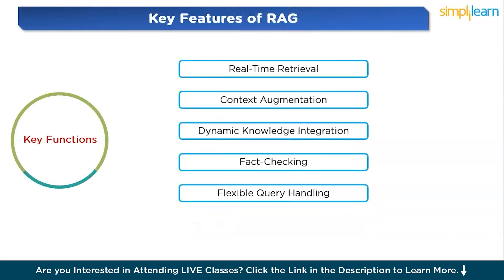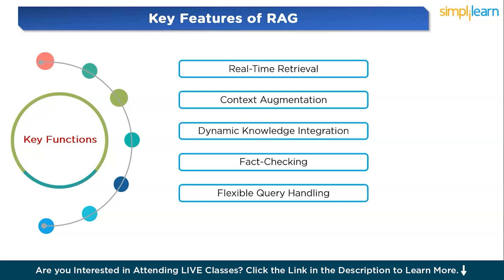Let's look at some key features of RAG. The first is real-time retrieval: RAG enhances the language model by fetching relevant information from external sources like databases or vector stores in real time, ensuring the model has access to up-to-date information during inference. The second is context augmentation: once relevant documents are retrieved, they are appended to the user's input query. This enriched context helps the model generate more accurate, informative, and contextually aware responses.